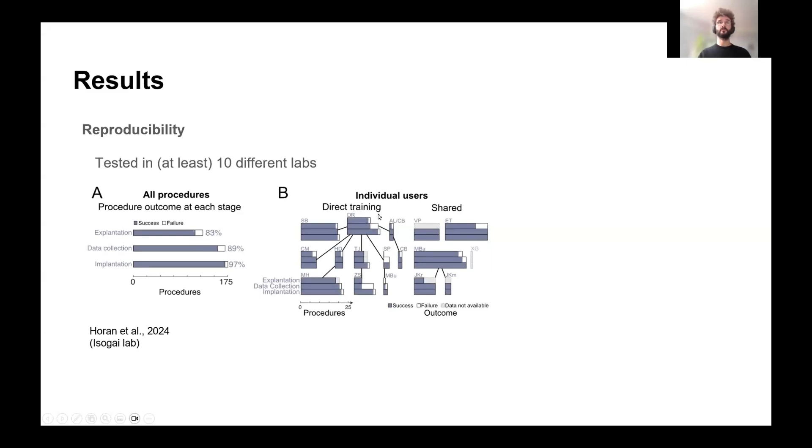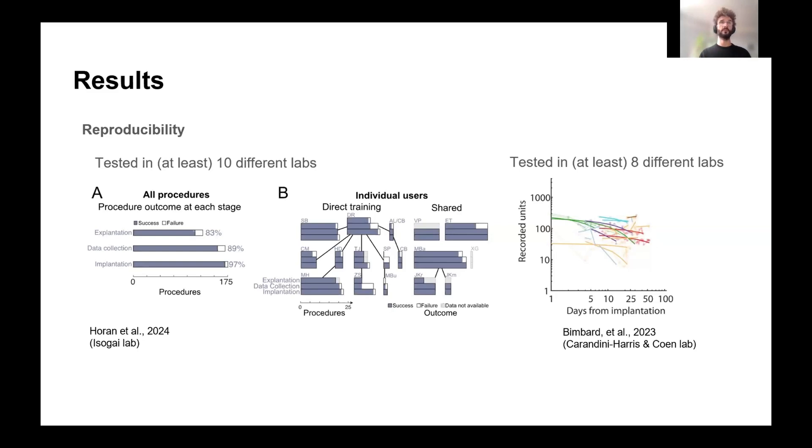And then here, this is breaking it down across different labs. So this is the initial lab that developed it with Daniel Regester here, who was the one who developed it. And then he trained all these different people who themselves trained these different people. And these guys actually on the side are the labs that used it without even direct training. And you can see that overall, this is well reproducible that people managed to learn to perform these implantations. And this is in our lab here, where again, this number of recorded units quality of recording as a function of days, and each color is a different lab, and many different labs have been able to reproduce that.